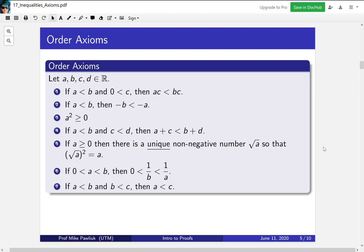The first one says that if you have an inequality a less than b and c is a positive constant, then you can multiply through by that positive constant and it won't change the inequality. The second one says that if you multiply an inequality by negative one, it will reverse. The third one says that squares are always non-negative.